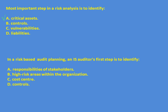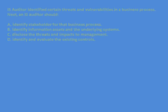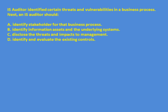Next question: In a risk-based audit planning, what would be the first step — audit responsibilities of stakeholders, high risk areas within the organization, or core center controls? Following the steps, business environment is first, assets second, and high risk identification is third. Since business environment and critical assets are not among the options, the answer is identifying high risk areas within the organization.